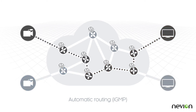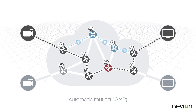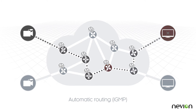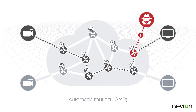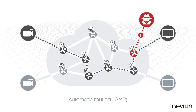Also, automatic routing does not handle the end-to-end path diversity needed for flow protection. And, it will route traffic to any destination that requests it, unless told not to, which is a security concern.